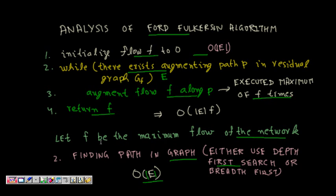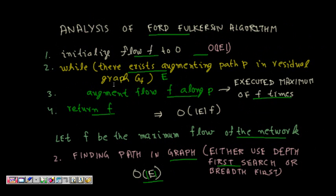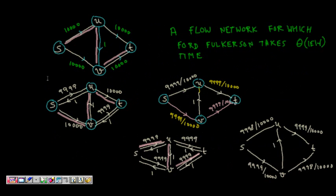Hence what happens, this while loop can maximum run for F times and each time in the while loop to find the path it will take O(|E|), so it will be total of O(|E| × F) will be the complexity of this. Generally this F, the maximum times it is executed, this loop is less, but in the worst case what might happen, let's see this graph.